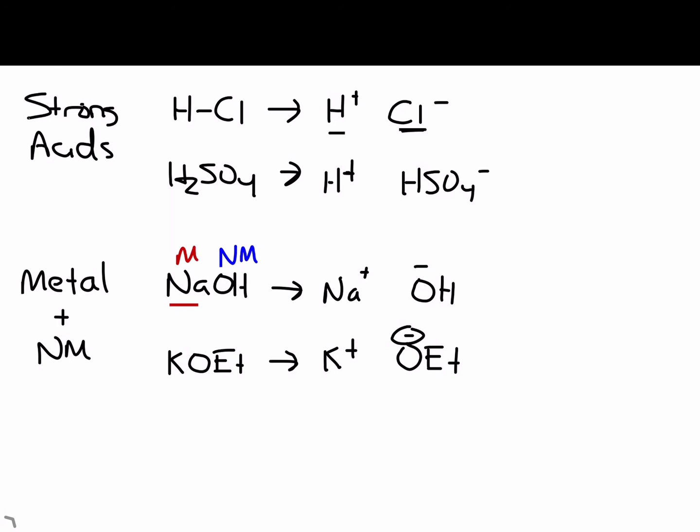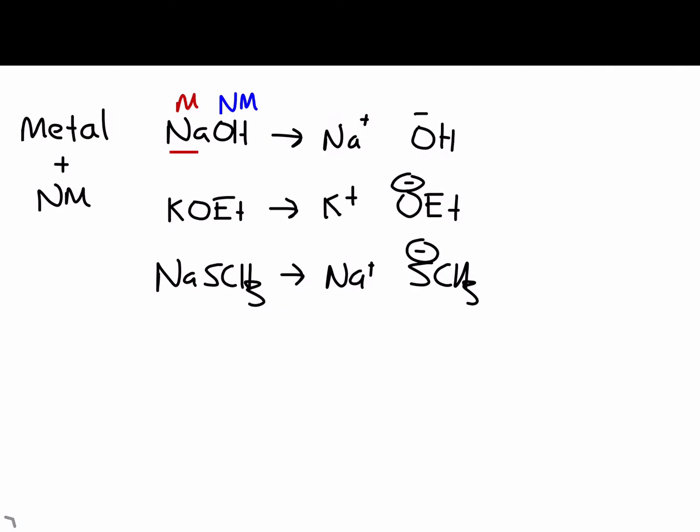You can do a sulfur analog. Okay, NaSCH3. Na plus, SCH3 minus. Just a couple more. KCN, potassium cyanide. K plus, CN minus. One last one that we encounter quite a bit in class. Sodium amide NaNH2. Na plus, NH2 minus. Okay, it's fine to break all of these into ions.